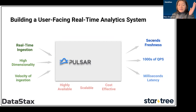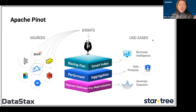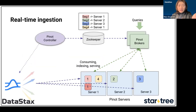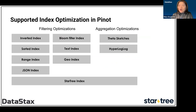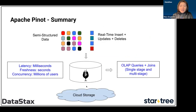For building user-facing real-time analytics, we use Pulsar combined with Apache Pinot. Pinot is very event-driven — different sources feed into events for real-time ingestion. It has a Pinot controller, uses ZooKeeper for different servers, and brokers handle all queries. It consumes, indexes, and serves data. The StarTree index is very fast — a proprietary algorithm. The result: milliseconds of latency, seconds freshness, and concurrency of millions of users.